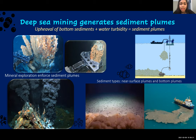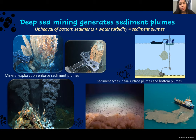Sediment plumes will initially occur on the seabed at the source of the mining site; however, they can also occur at the sea surface. The plumes created at the seabed are known as near-bottom plumes, and those generated through transportation at the sea surface are known as near-surface plumes. Both near-bottom plumes and near-surface plumes can cause extensive damage to a range of sea organisms and underwater mountain features.